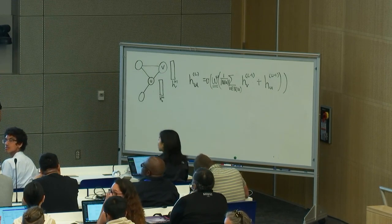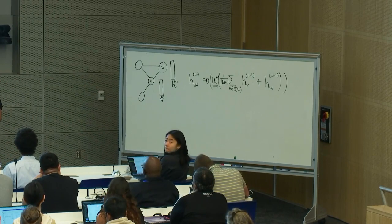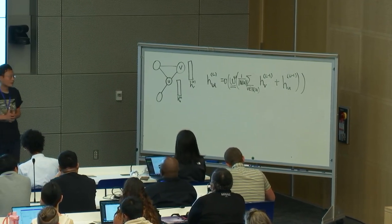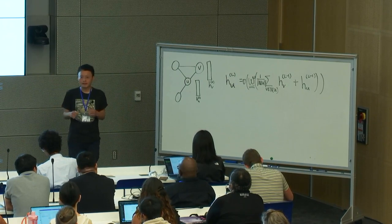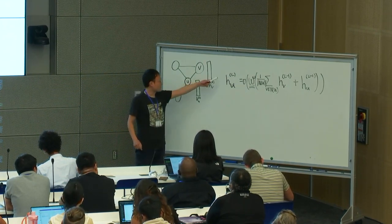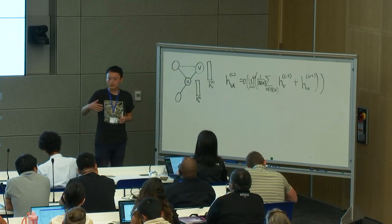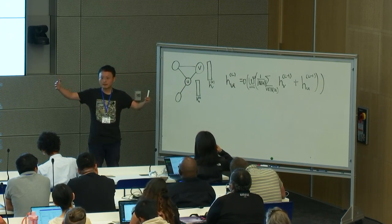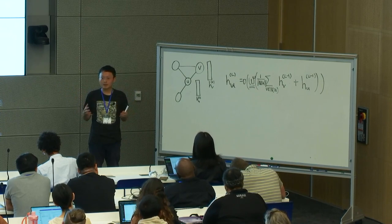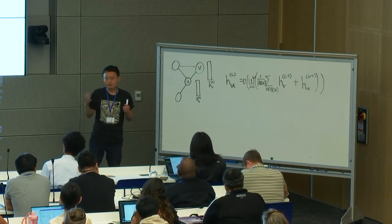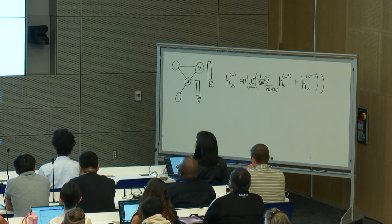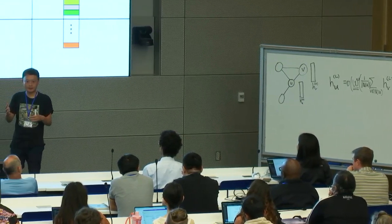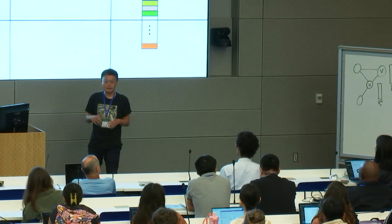One of the things we can do with this framework is ask the model to tell us what it thinks is the most relevant neighborhood size. For a lot of cancer samples, it seems like the neighborhood size is around three-hop neighbors — around 40 to 60 cells.